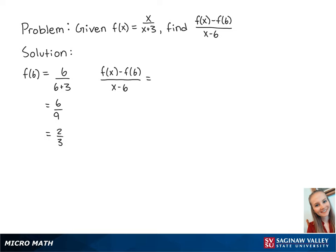Next, we're going to plug in our value for f of 6 so that we have x over x plus 3 minus 2 thirds all over x minus 6.